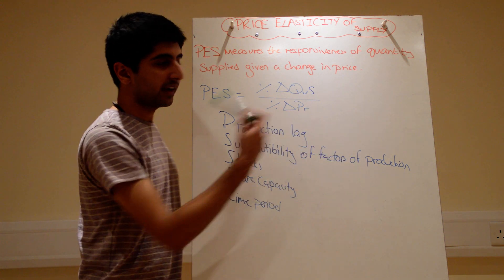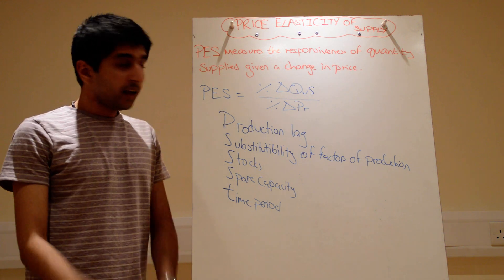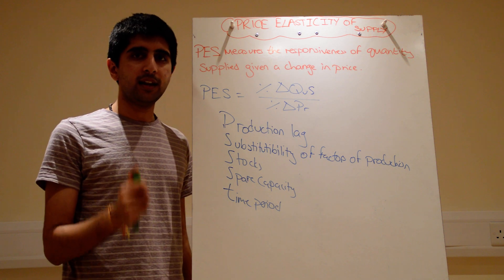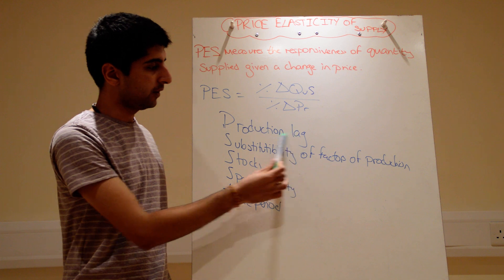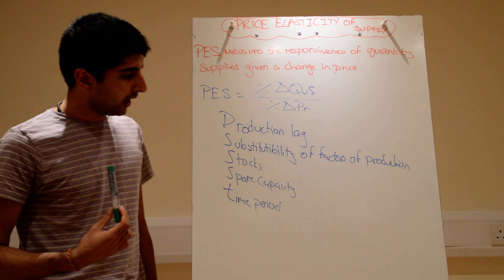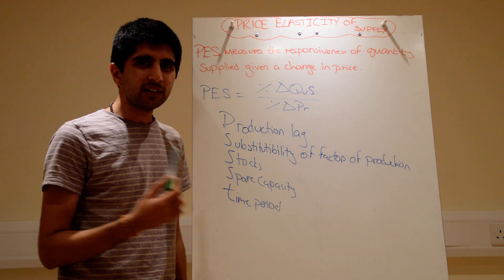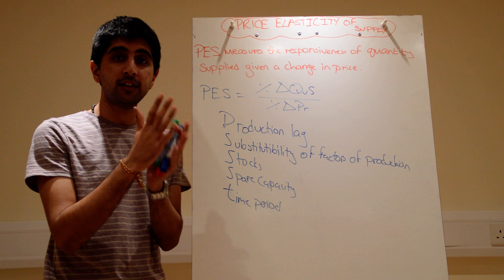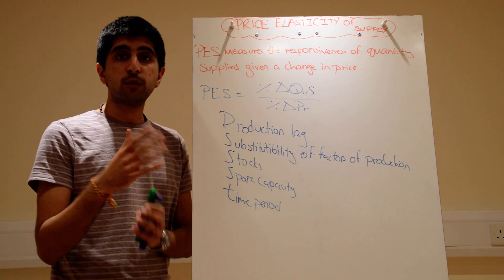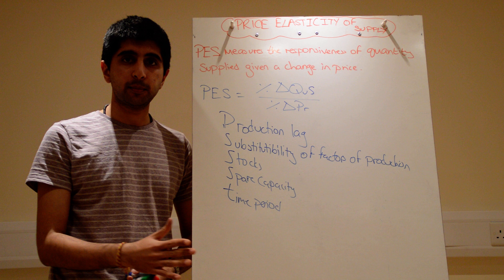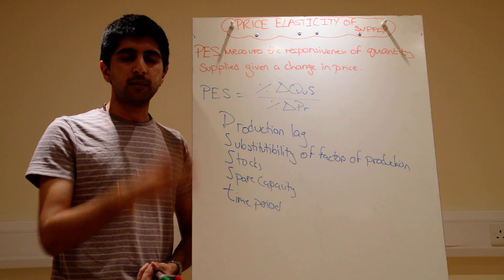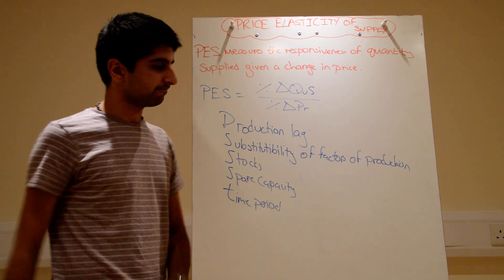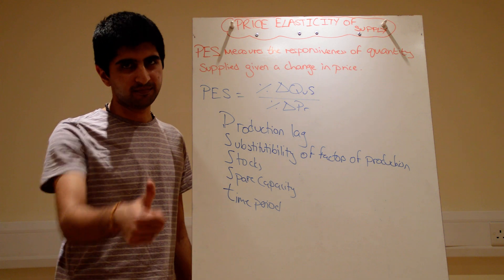So those are the five main factors that determine elasticity of supply. One thing to know is that most commodities tend to have inelastic supply, mainly because of long production lags, and also because you can't store many commodities for a long period of time. The same applies to raw materials — they tend to have quite inelastic supply. This is good to know when drawing demand and supply diagrams, as it's useful for evaluation and discussion. That's PES — very simple.